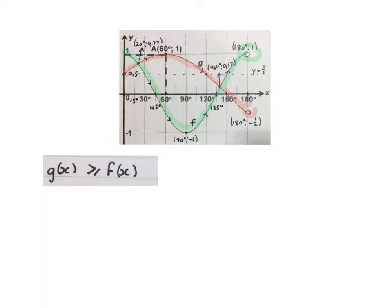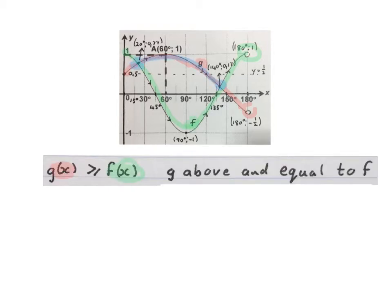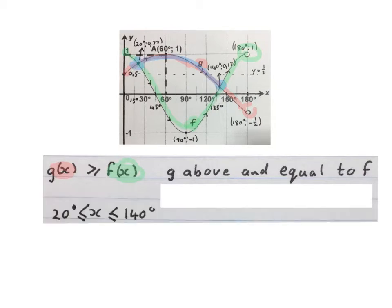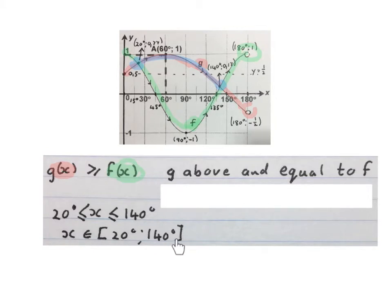The next question asks where is g of x bigger than or equal to f of x — where is g above and equal to f. That is the blue area including the two intersections. So x is bigger than or equal to 20 degrees and x is smaller than or equal to 140 degrees. You may write it in interval notation.